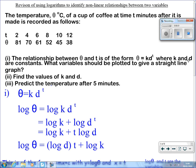This is revision of using logarithms to identify non-linear relationships between two variables. In the example we have the temperature θ of a cup of coffee at time t minutes after it's made.